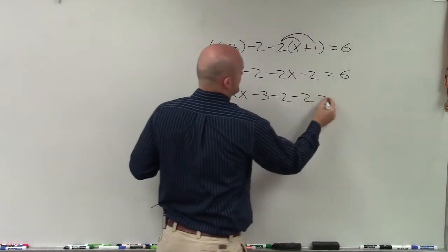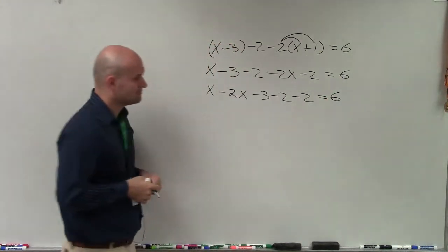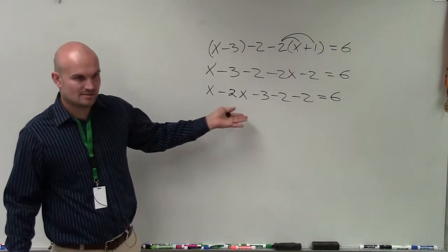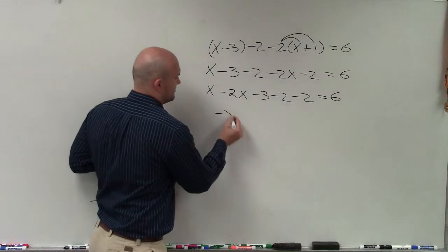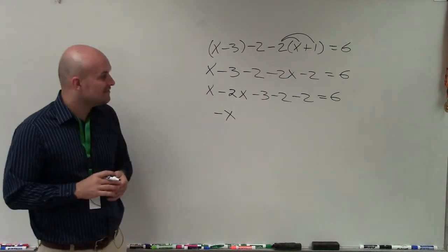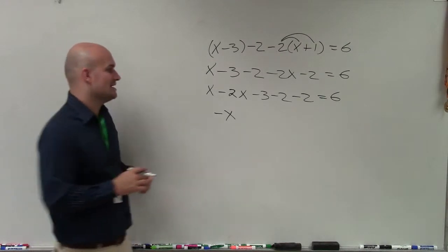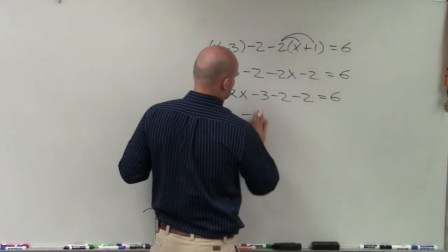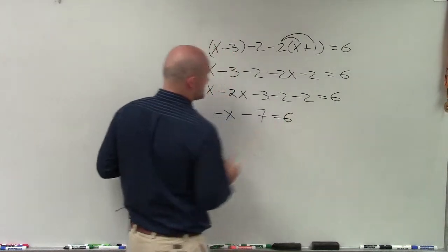As long as you keep the signs, you'll be OK. So x minus 2x is negative x. And then negative 3 minus 2 is negative 5. Minus 2 is negative 7 equals 6.